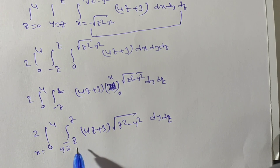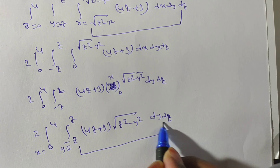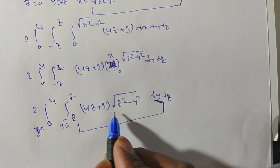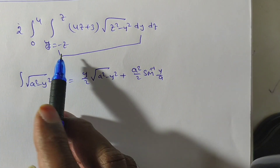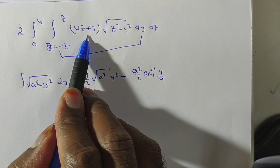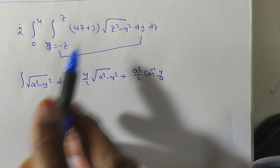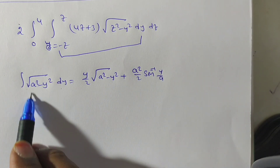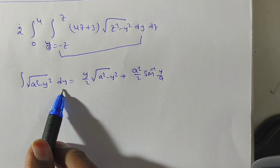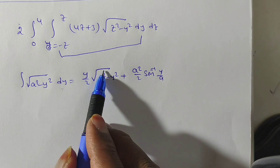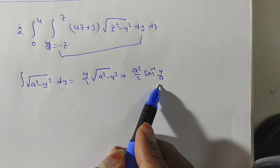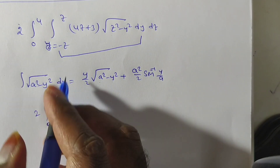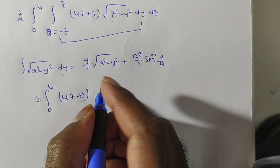Now integrate with respect to y, then z. The y-limits are −z to z and z-limits are 0 to 4. Since the integrand √(z² − y²) requires a standard formula: ∫√(a² − y²) dy = (y/2)√(a² − y²) + (a²/2) sin⁻¹(y/a) + C. Here a = z, so apply this formula with limits y = −z to z.